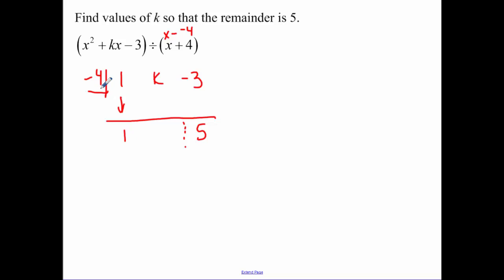Negative 4 times 1 is negative 4. Remember, we add those two numbers, so that's k minus 4. Then I take and I multiply k minus 4 times by a negative 4. So set up your equation.